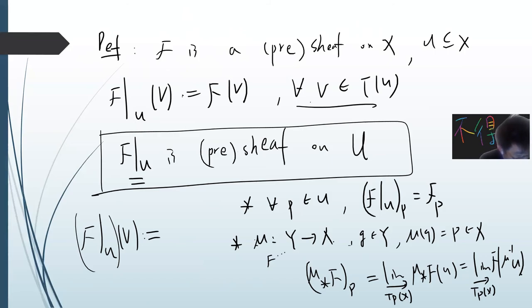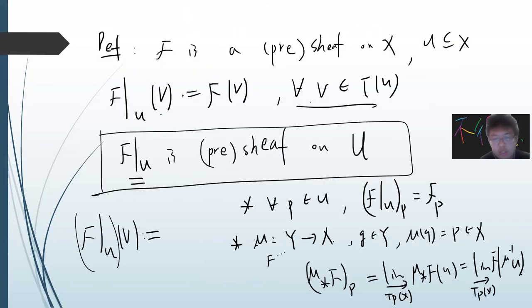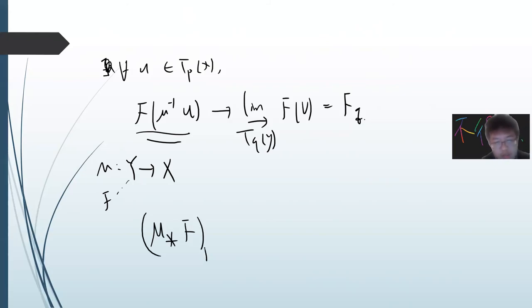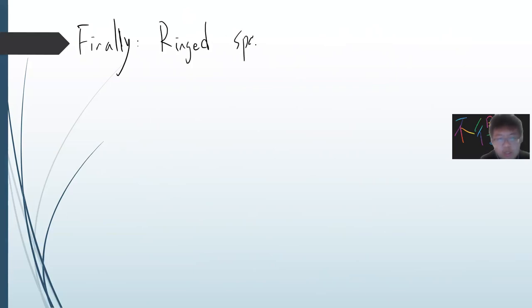To summarize: once you have such a map, you naturally get a canonical map from μ_*(F)_p, the stalk of the direct image at p, to F_q, the stalk at q, where μ(q) = p. This map goes in the reverse direction of the continuous map, which is a key feature.